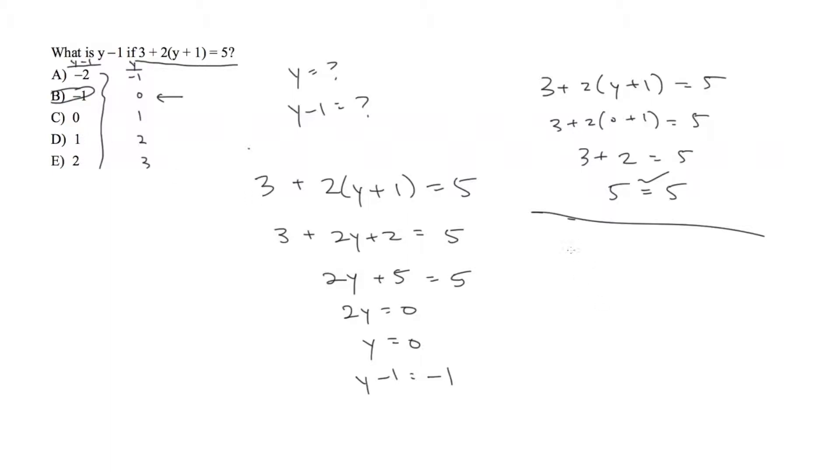Now, just to show you one that doesn't work, let's plug in answer choice D. If we plug in our y value, which is 2, we have 2 times 2 plus 1 equals 5. 3 plus 2 times 3, which is 6, and we see that 9 does not in fact equal 5, so D is out. And you'll see the same does not work for A, C, and E as well.